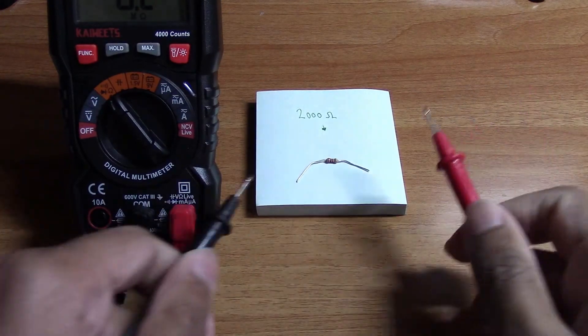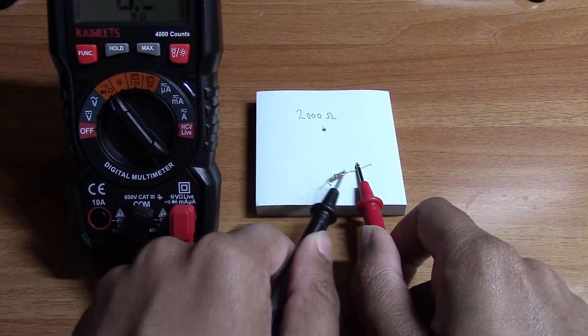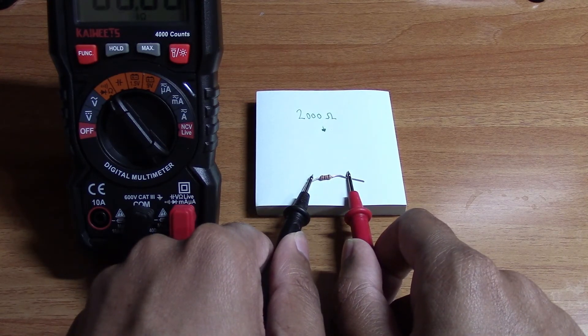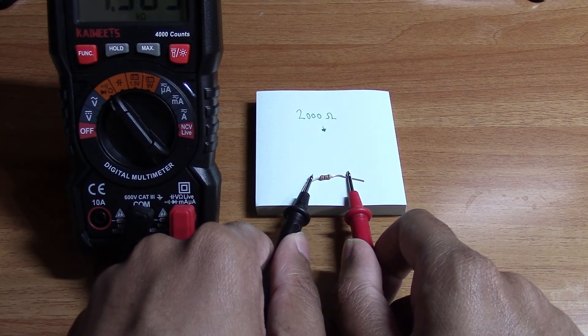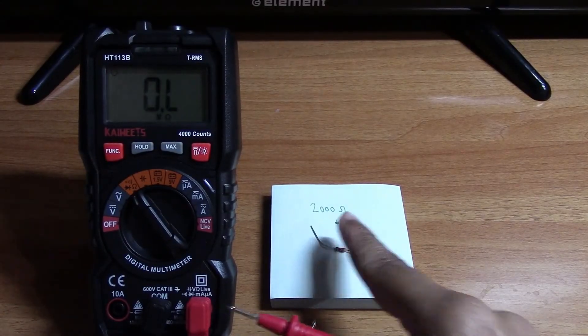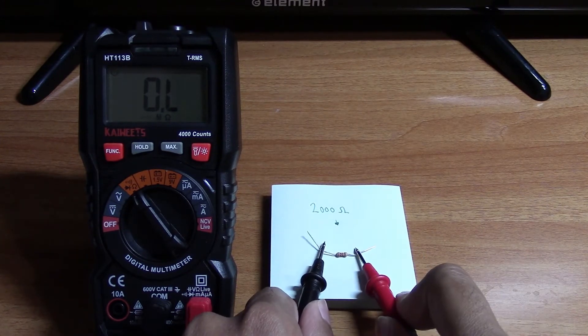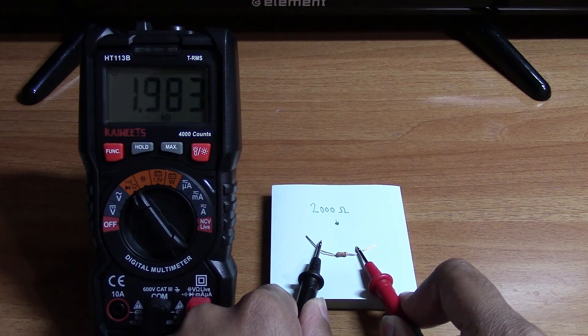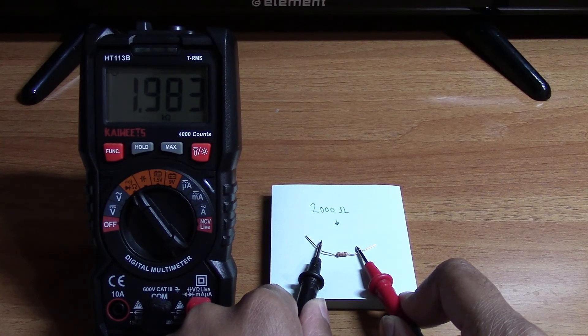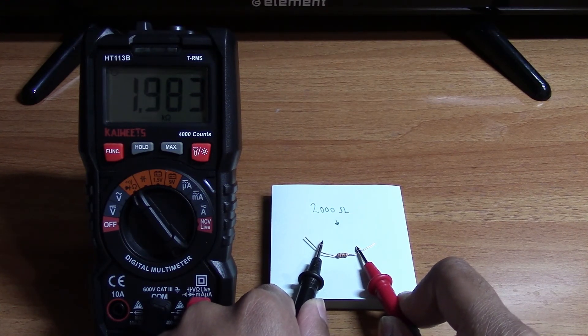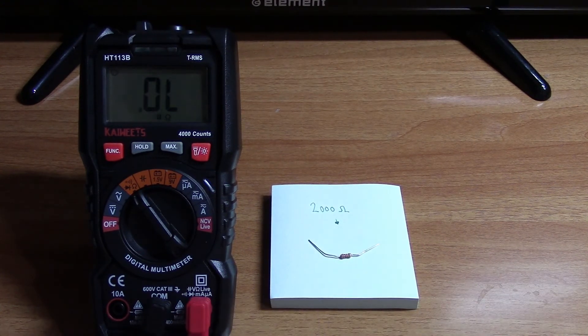Testing this, we just put one probe on one end and one on the other. Let's raise it up a little bit. We get 1.983, so that's going to be 1,983 ohms, which is right within range, so it's good.